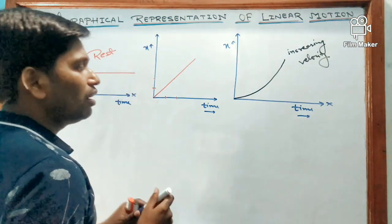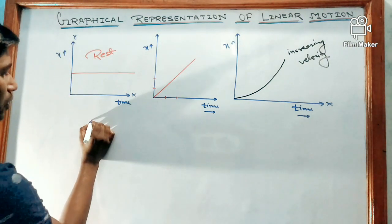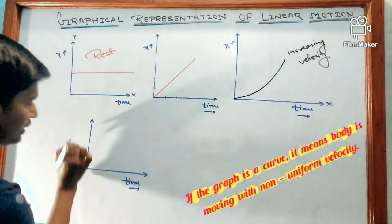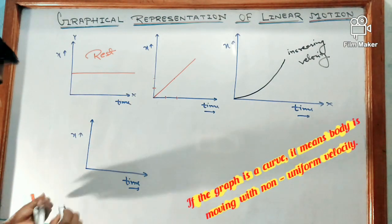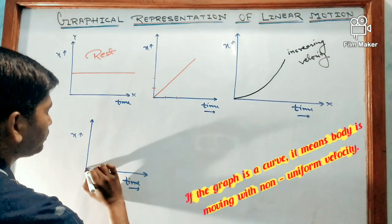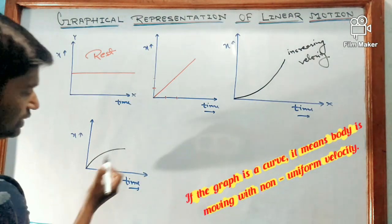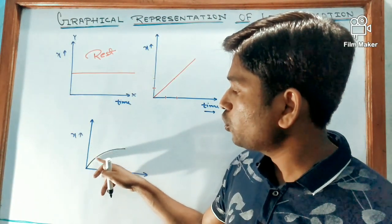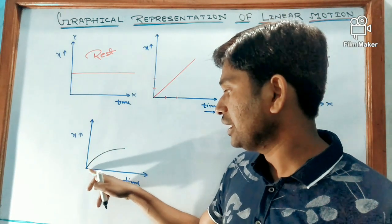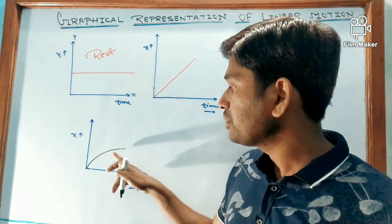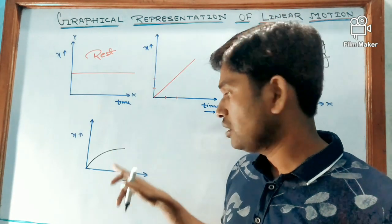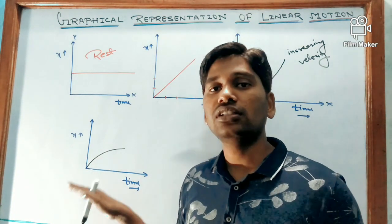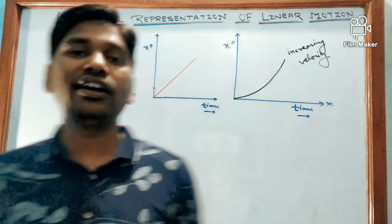If we observe a graph just opposite to the previous one — with displacement on one axis and time on the other — where initially the change in displacement is more but time taken is less, and after some time the change in displacement is less but time taken is more, this represents decreasing velocity.